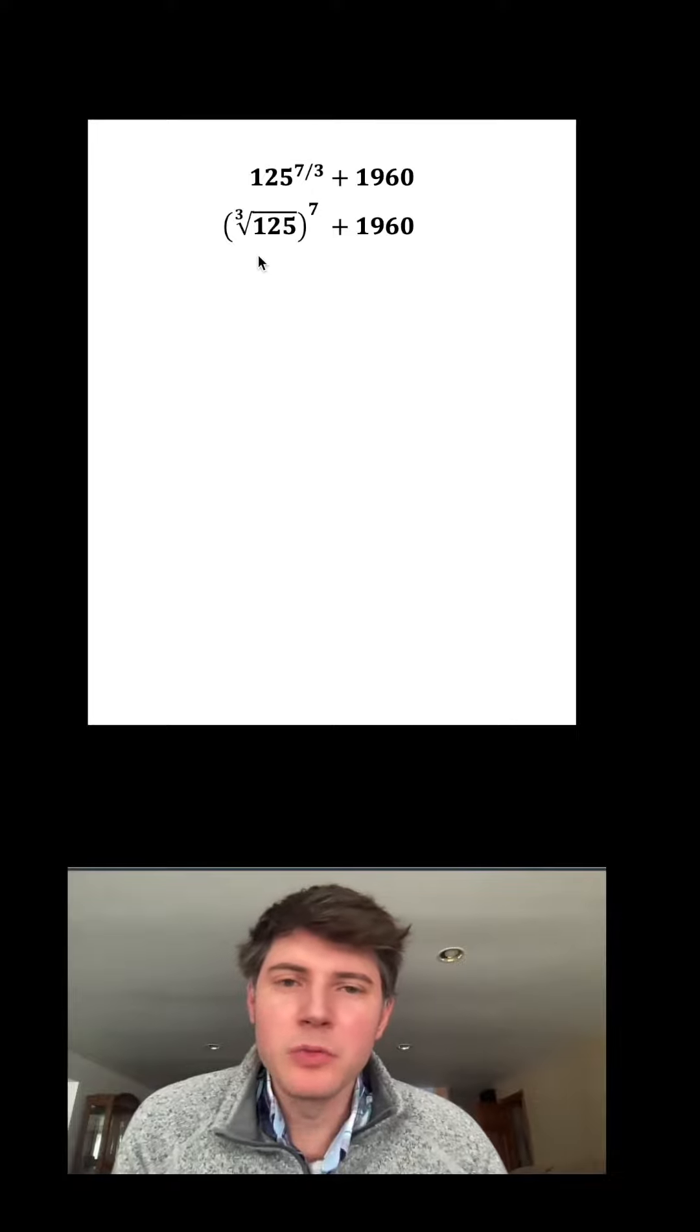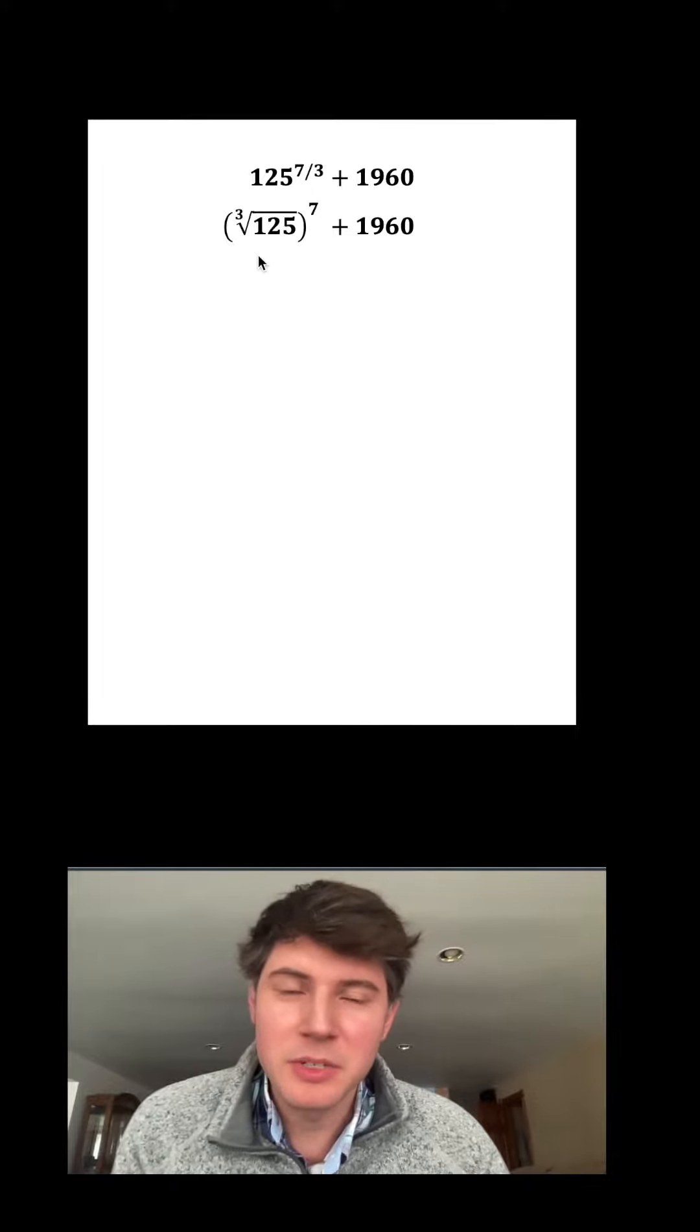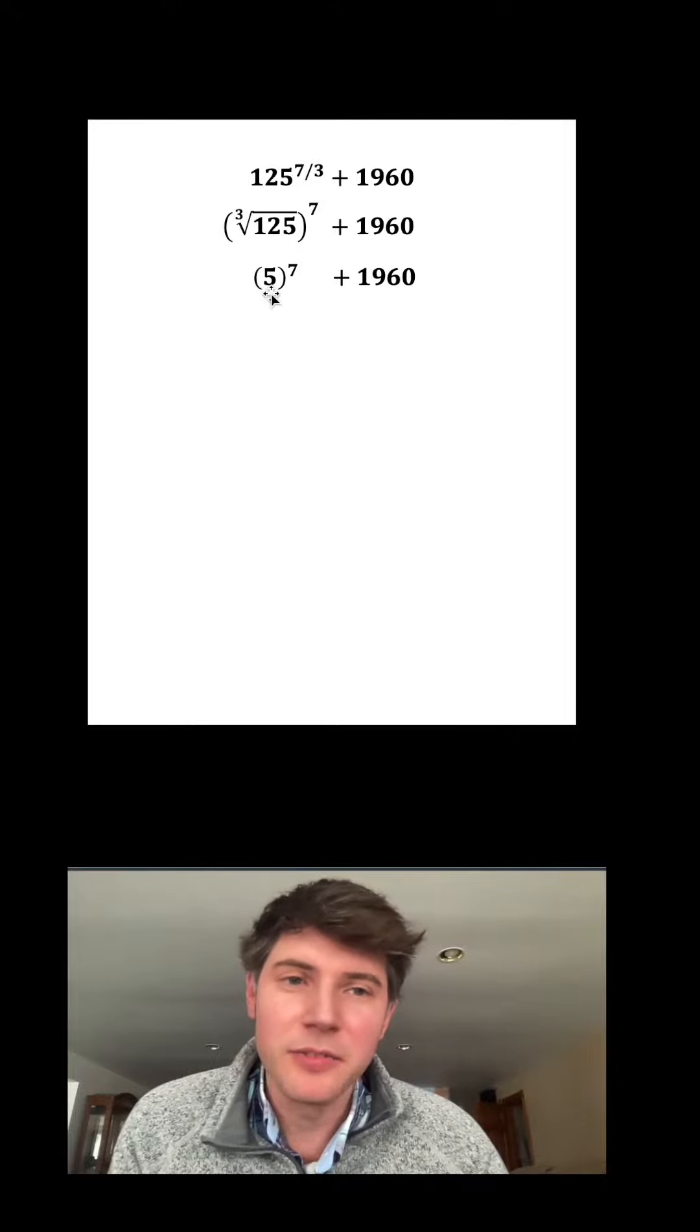Next, what is the cube root of 125? Well, that means what multiplied by itself 3 times gives us 125. 5 times 5 times 5 is 125, so this ends up being 5.